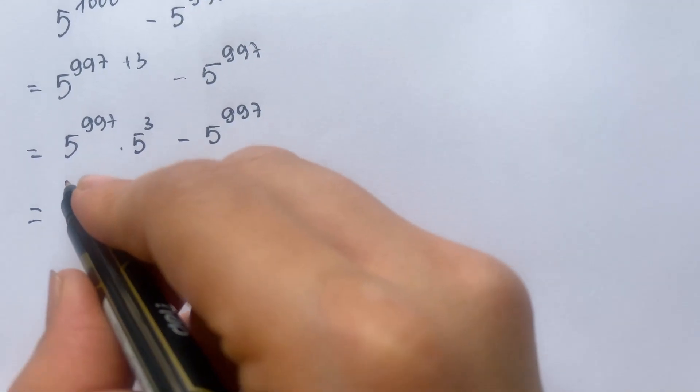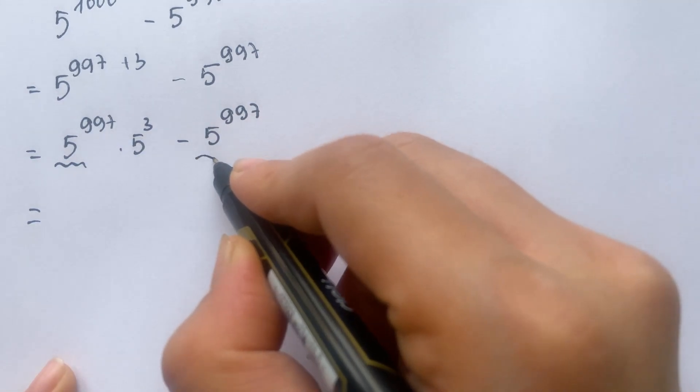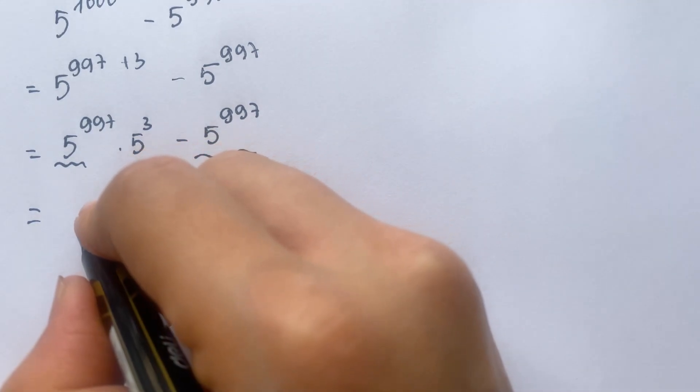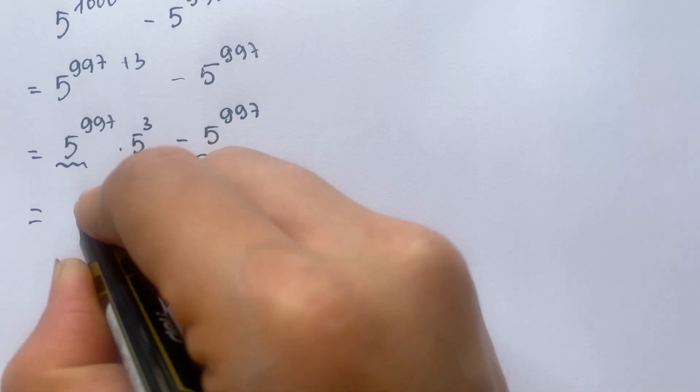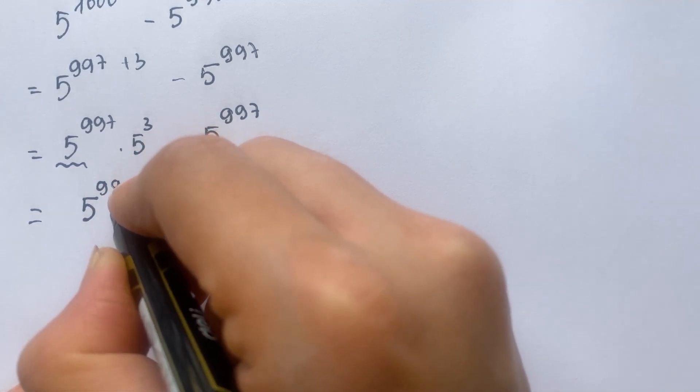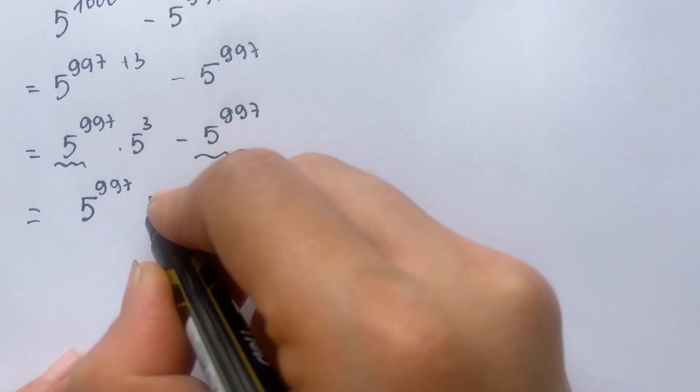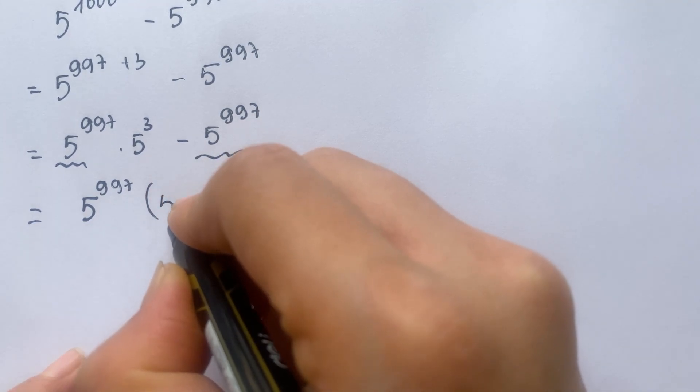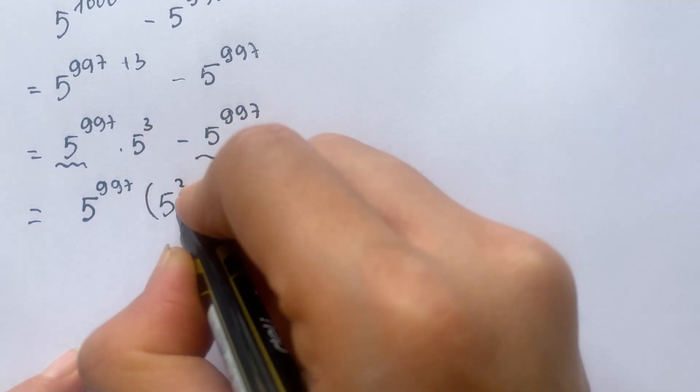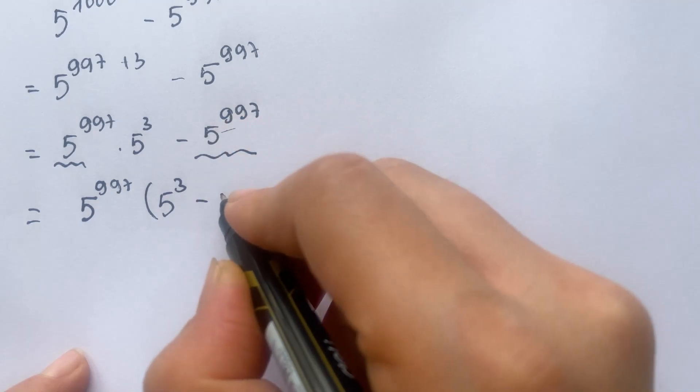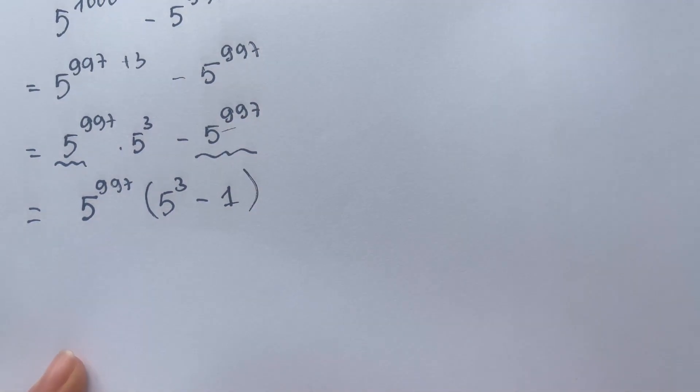And then, everyone look at that, it's a common number, so you need to take it down 5 power 997 times 5 to the power 3, and here, minus, minus 1, yes?